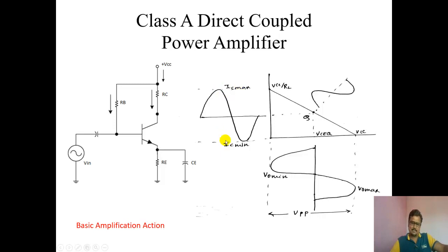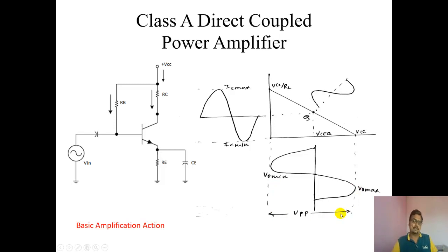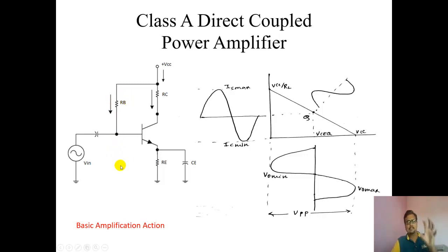IC max minus IC minimum will be twice ICQ, and VO max minus VO min equals peak-to-peak voltage, which equals VCC. This is the Class A direct coupled amplifier. The circuit diagram of a Class A direct coupled amplifier is quite the same as a single-stage RC coupled amplifier — except instead of RC, you connect a loudspeaker.